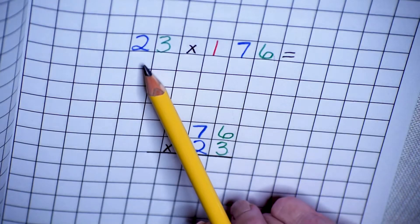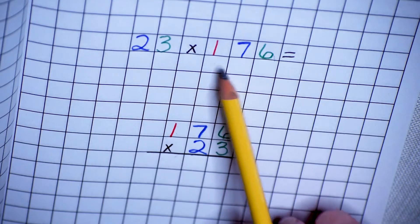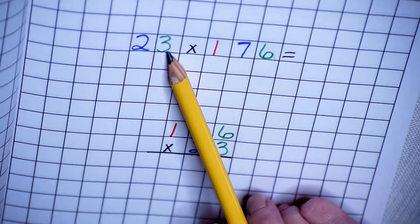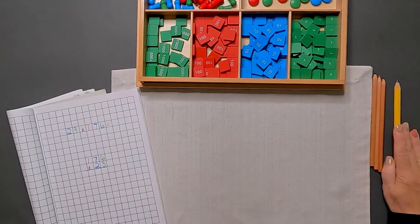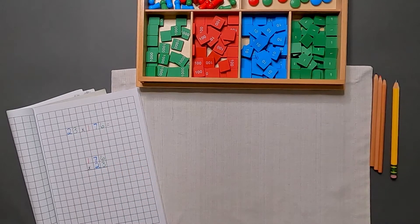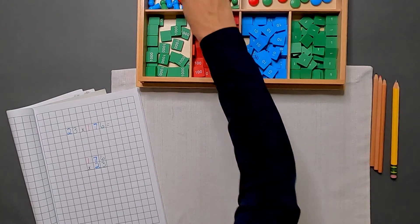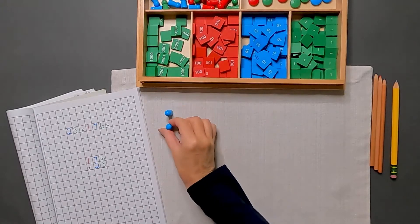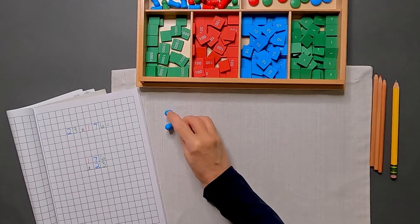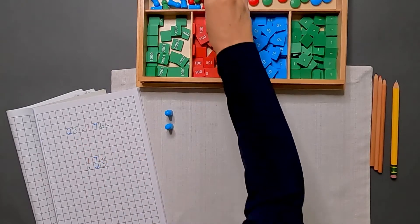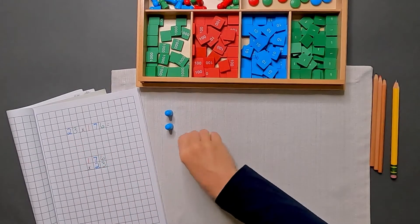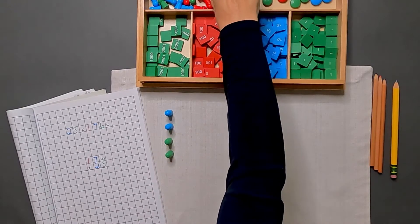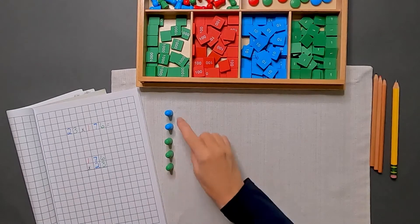Let's go ahead and start taking 176, 23 times here on our mat. The first thing we're going to do is take out our Skittles. We need two blue Skittles to make up 10, 20, and I'll need three green Skittles. One, two, three. So I've made 23.